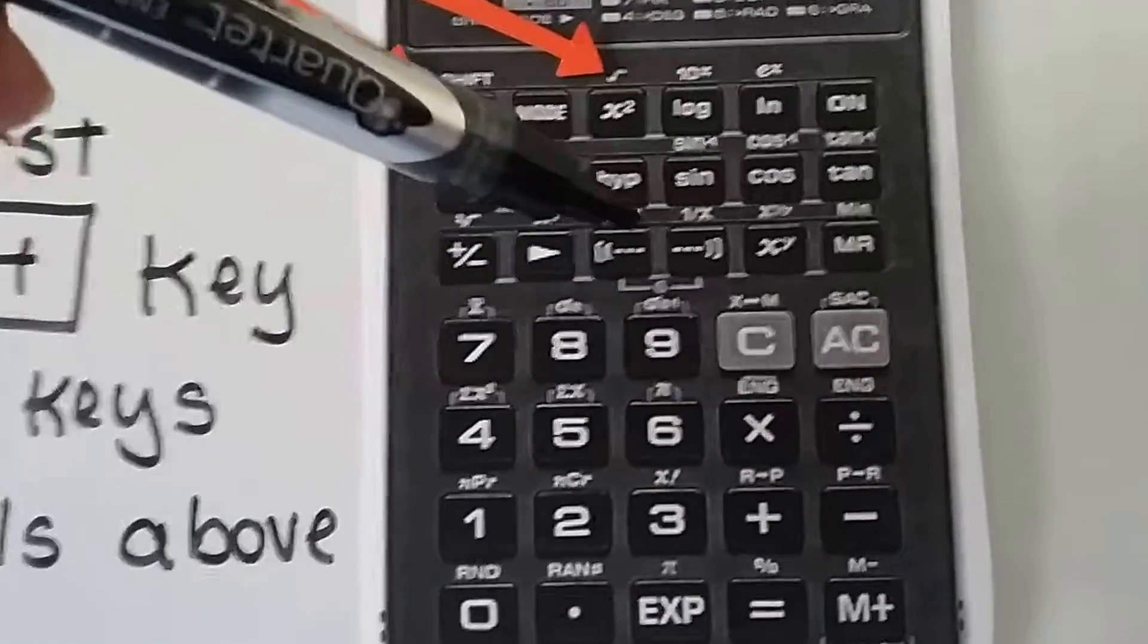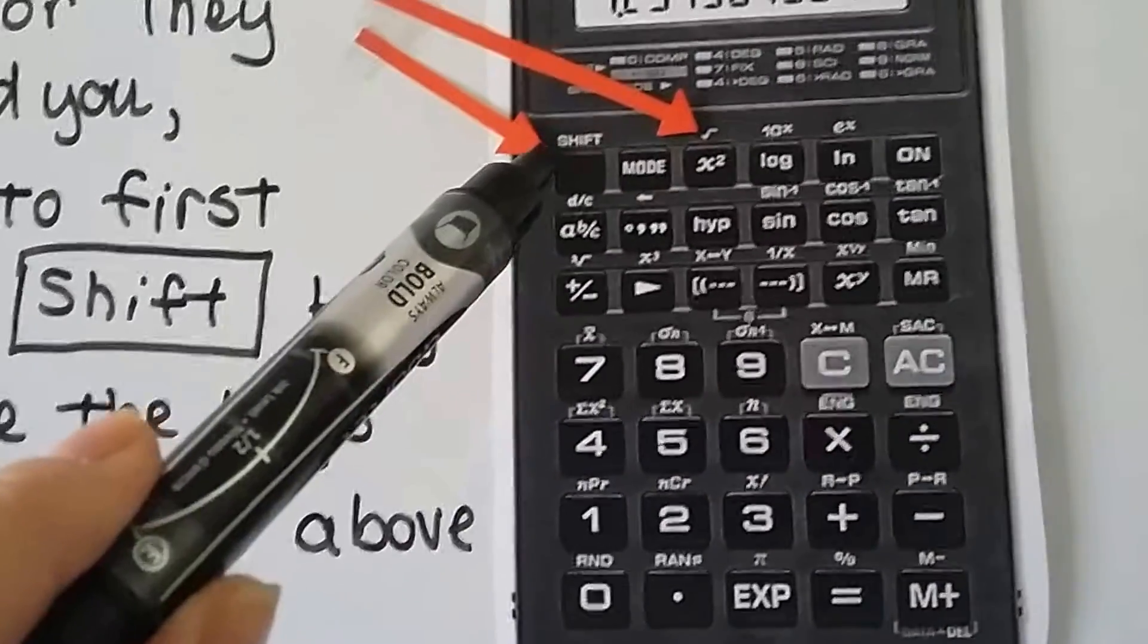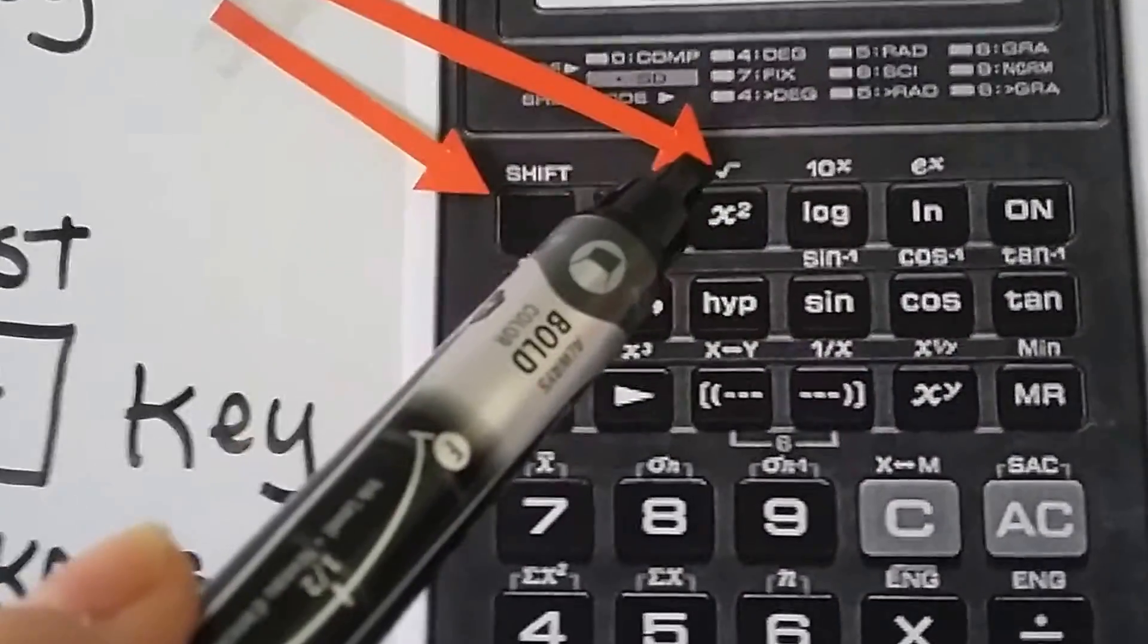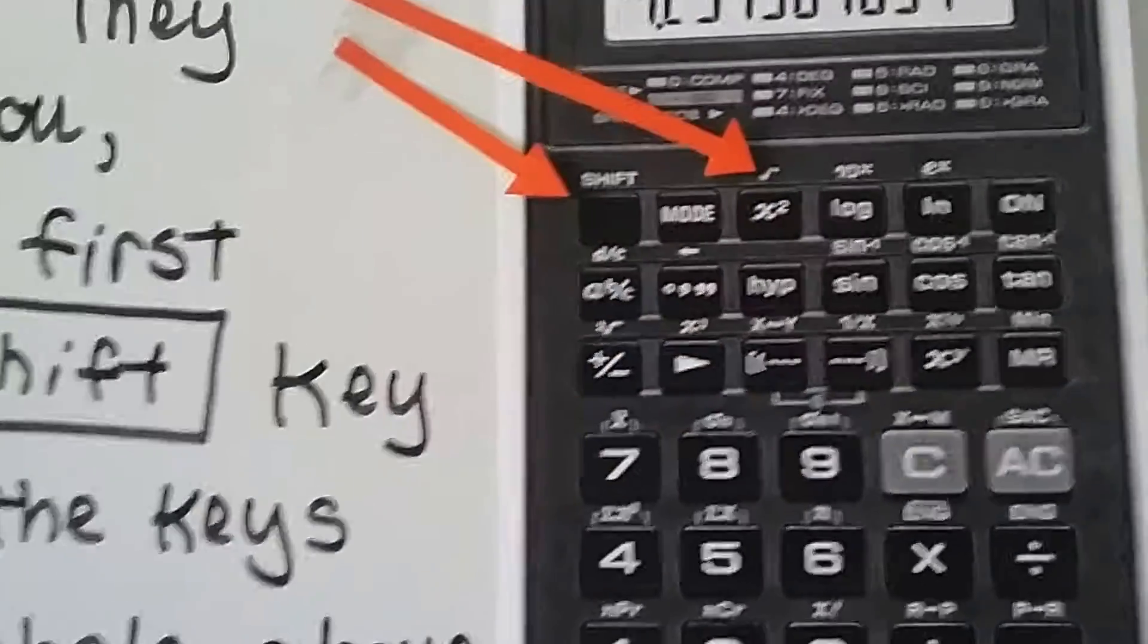Look at all these symbols above the keys. So, if you hit Shift, then you'll be able to get to this square root sign right here, this radical sign that's above the x to the second power. You'll be able to get to that.